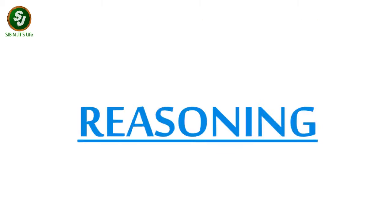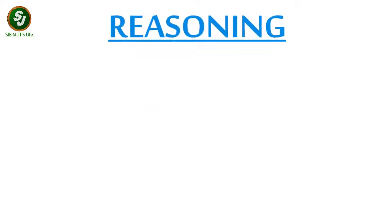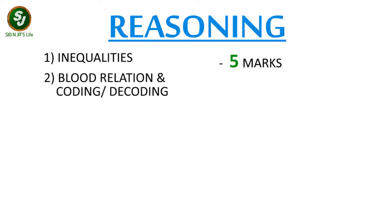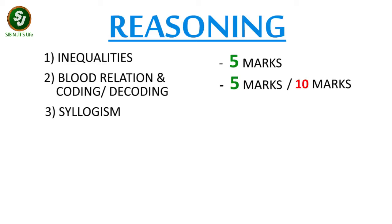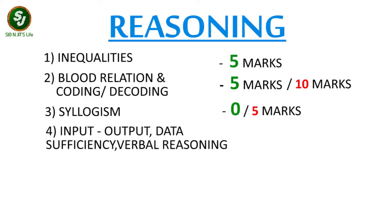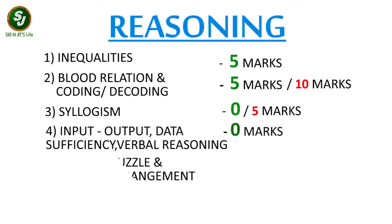Now let's move to the Reasoning section. The first topic can be Inequalities, which will consist of 5 marks. Then we'll have Blood Relation and Coding-Decoding, which will be of 5 marks but you can expect 10 marks also. Next is Syllogisms — questions from this section are generally not asked, but to be on the safer side you can practice them; even if it comes it will be of 5 marks only. The next topics — Input-Output, Data Sufficiency, and Verbal Reasoning — are generally not asked, so you can expect 0 marks from them.